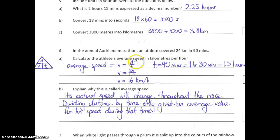Our formula is distance divided by time. Distance is 24 kilometres, and time is 1.5 hours. Putting that into a calculator gives us 16. The units — which you had to have correct for excellence — are kilometres per hour.